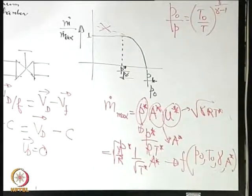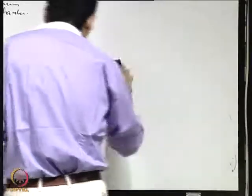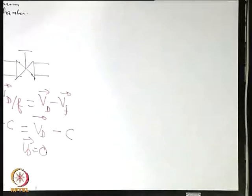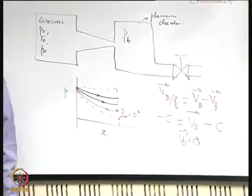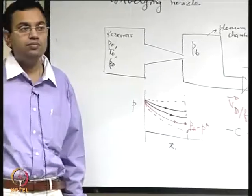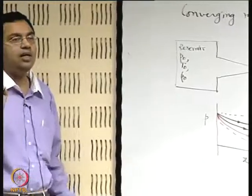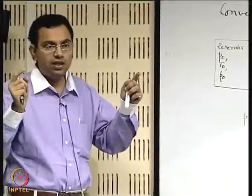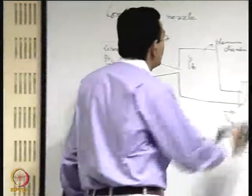This is about the converging nozzle. Now let us consider what happens for a converging-diverging nozzle. The limitation of a converging nozzle is that if you want to accelerate flow from subsonic to supersonic, you cannot — the maximum Mach number is 1 at the exit. So if you want to accelerate further, you must add a diverging section, which is why a converging-diverging nozzle is important.